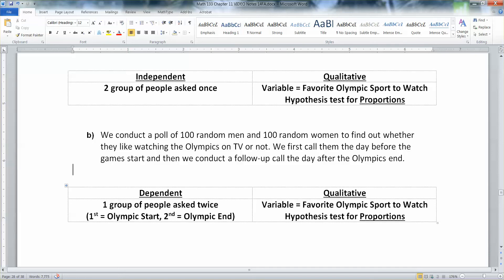So they start off thinking, I'm going to like swimming, and they actually didn't like it at all, and they love luge or kayaking or whatever. So, again, the variable is your favorite sport to watch, and that hypothesis test would be for proportions.